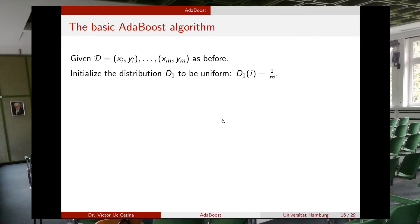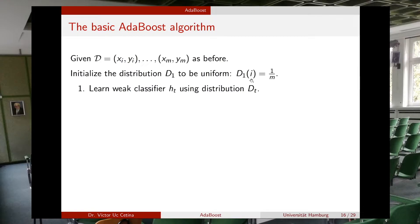Let's look at the AdaBoost algorithm. Consider we have m examples in our dataset. We first initialize the distribution D_i as a uniform distribution, so every one of the m examples has the same importance. We divide 1 by m — for example, with 100 examples each gets weight 0.01.